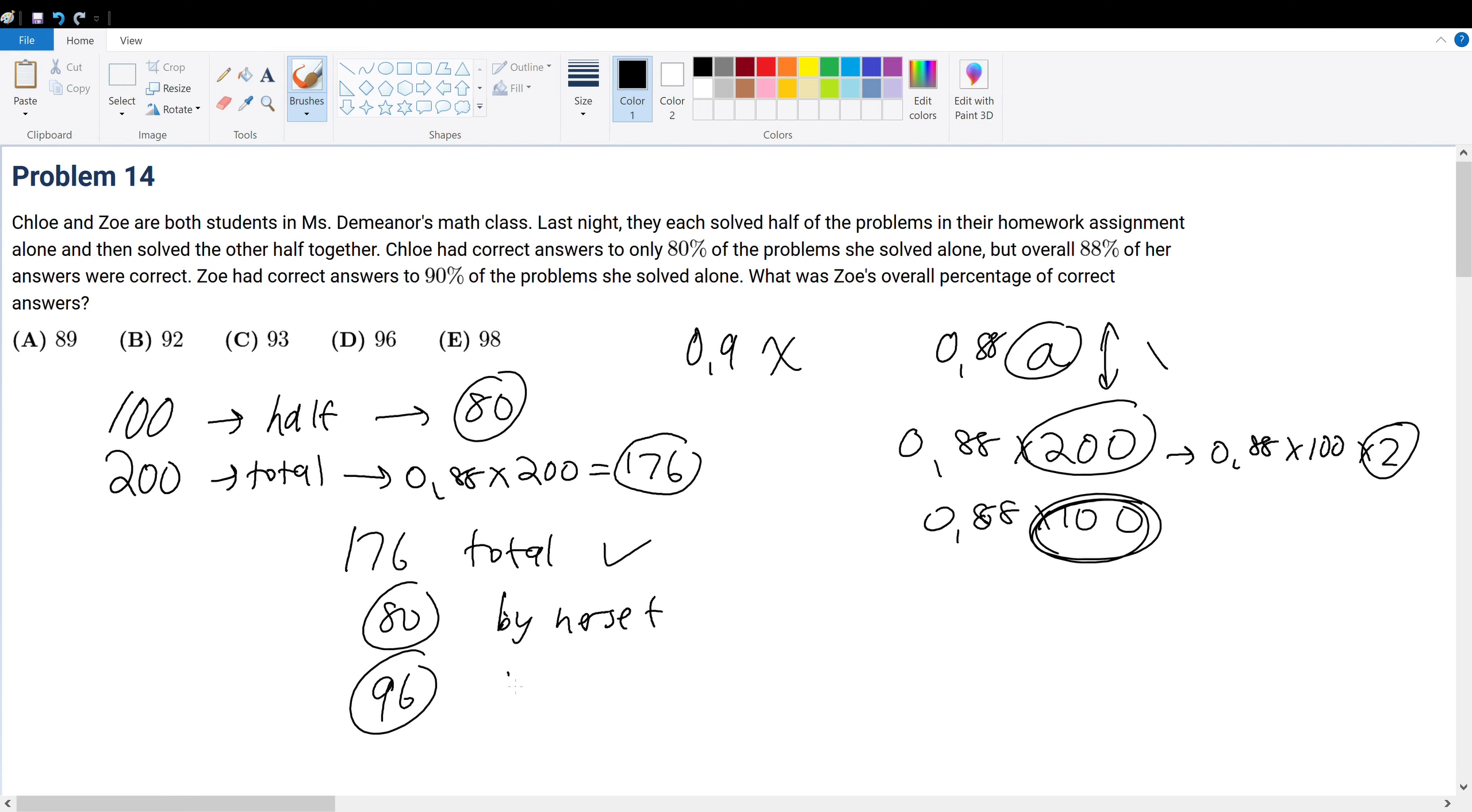This is her and someone else, which is Zoe. By herself plus the amount she got correct with the other person gives us the total 176 based on what the question told us.